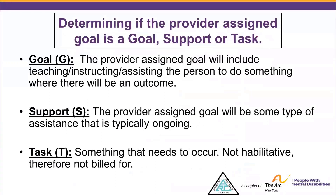Determining if the provider assigned goal is a goal, support, or task: a goal is defined as the person's ambition or aim of a desired result — it will include teaching, instructing, and assisting the person to do something where there will be an outcome. A support is defined as giving assistance to the person to hold up or maintain at a desired level — it is typically ongoing assistance. A task is something that needs to occur but is not habilitative and will not be billed for.